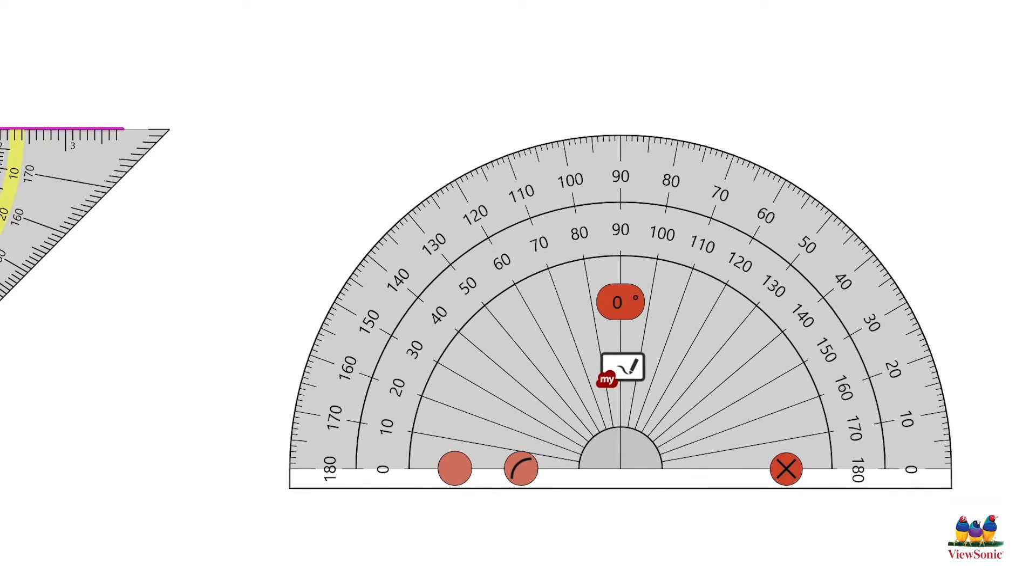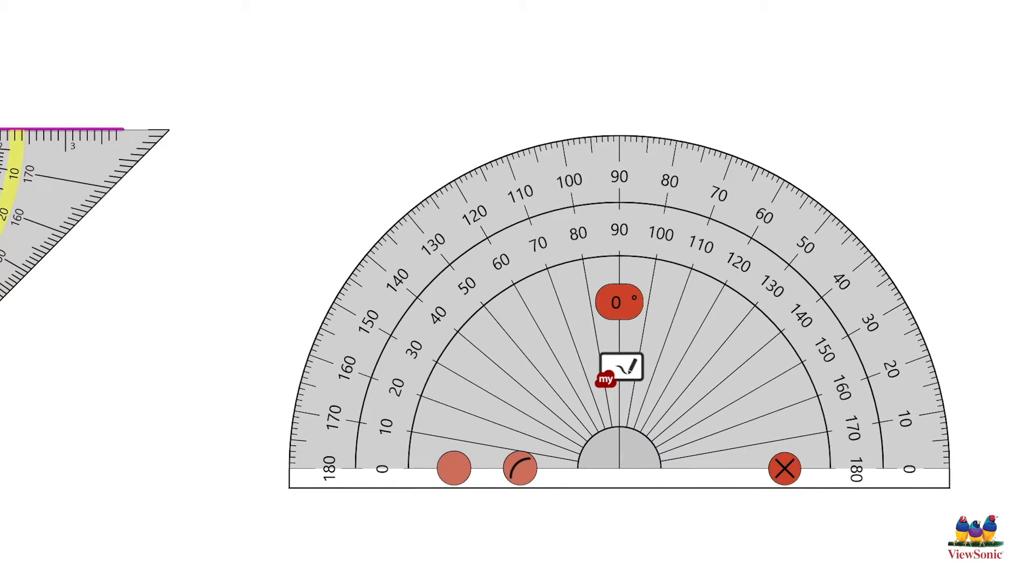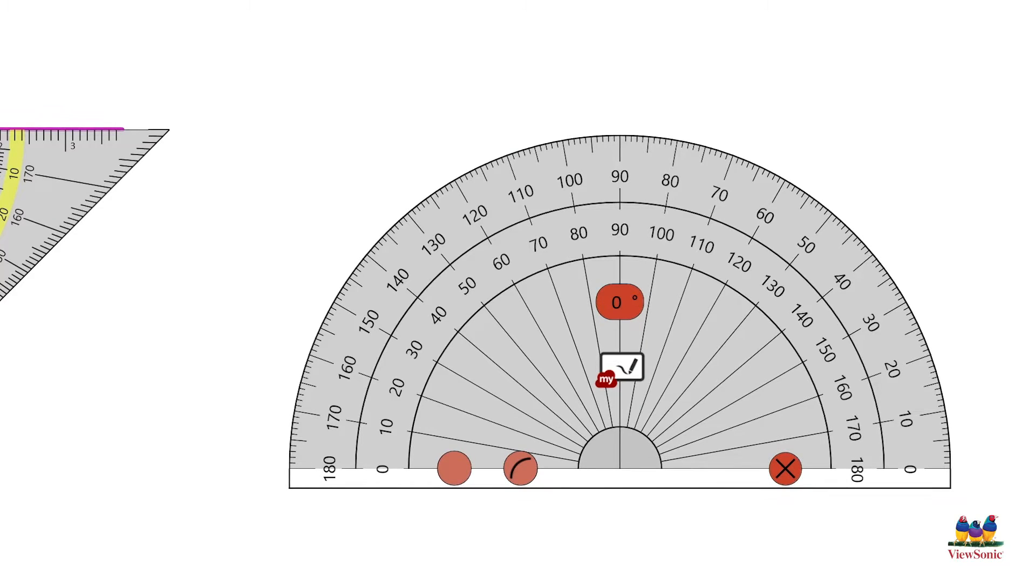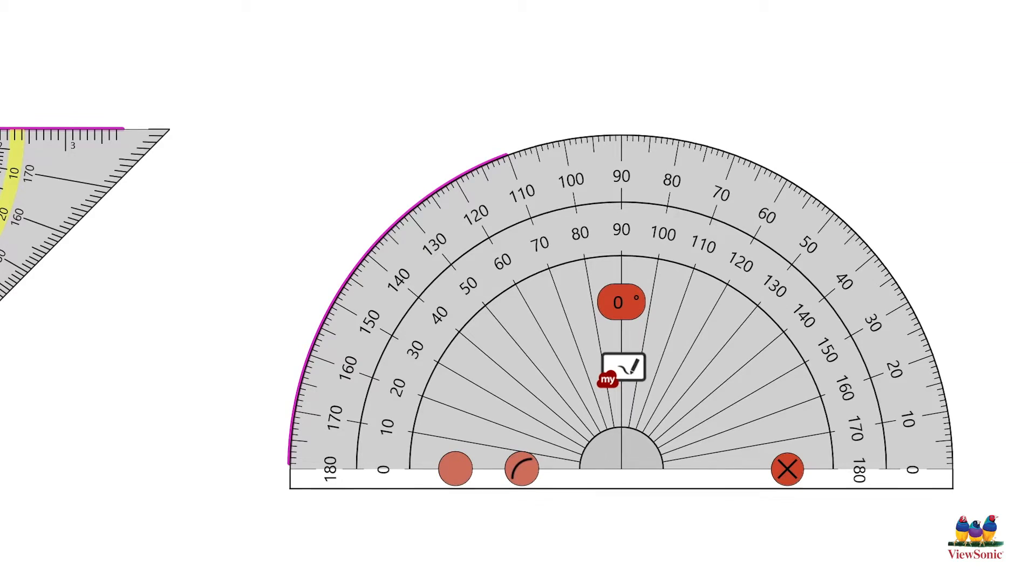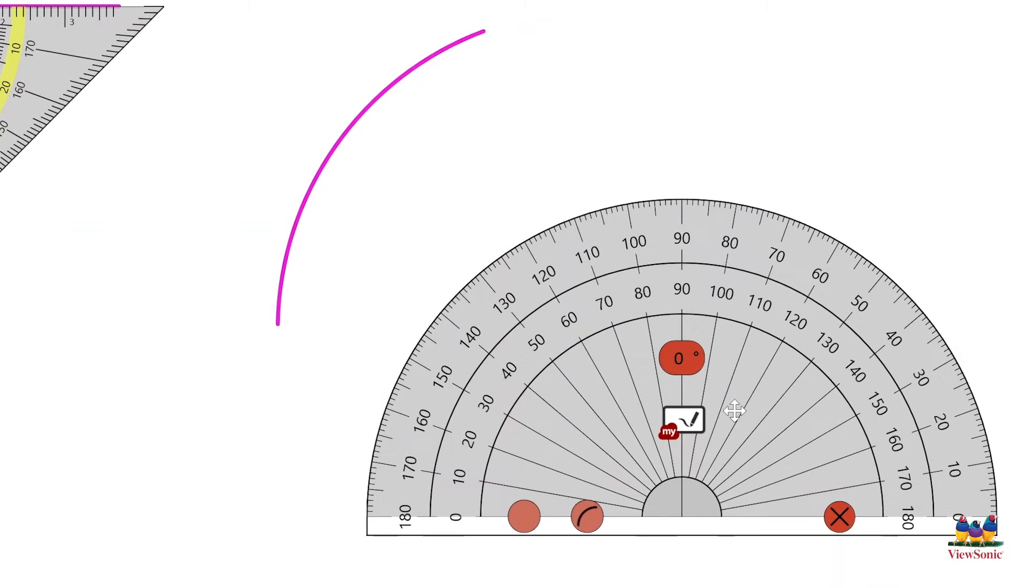Now the protractor is a little bit different because when you trace along the edge of a protractor, it's going to make an arc. There's two ways you can make an arc. The first way is as you see here, so there you have 70 degrees.